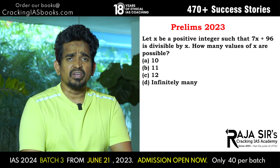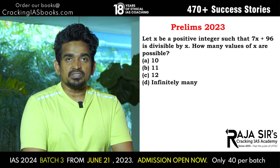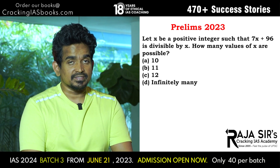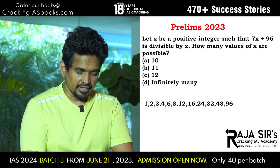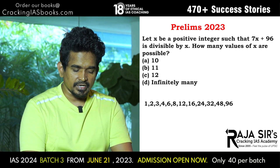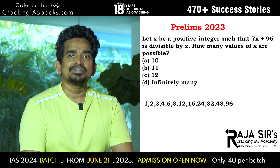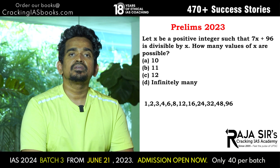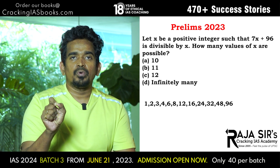This problem seems to be a bit difficult, but actually not difficult if you understand the logic. See, 7X plus 96. What I am going to do is factorize this 96. So 96 will have 12 factors. They are: 1, 2, 3, 4, 6, 8, 12, 16, 24, 32, 48, 96. That is, 1 into 96, 2 into 48, 3 into 32, 4 into 24, 6 into 16, and so on. Once you find out the factors of 96, you can easily come to a conclusion that there are 12 possible values.